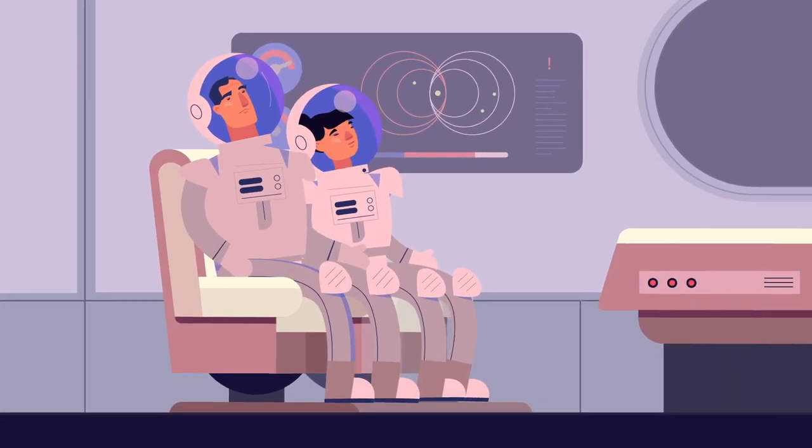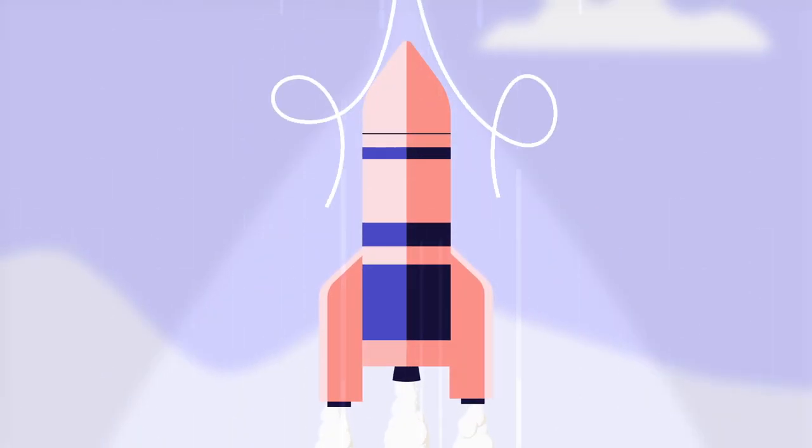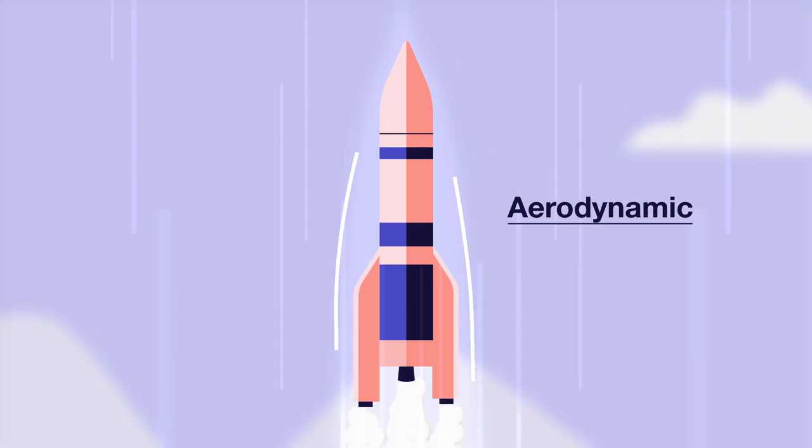When you go that fast, air can't get out of the way fast enough anymore. It will slow you down. To help air get out of the way, your rocket needs to be aerodynamic. So super thin and smooth.